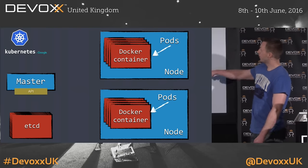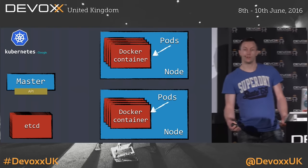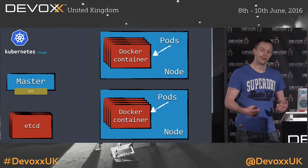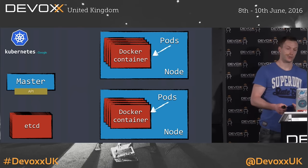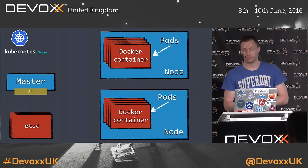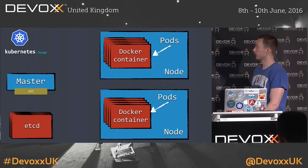Then we have a whole number of Kubernetes nodes. These are your worker nodes — the nodes where your containers will actually run and get started.